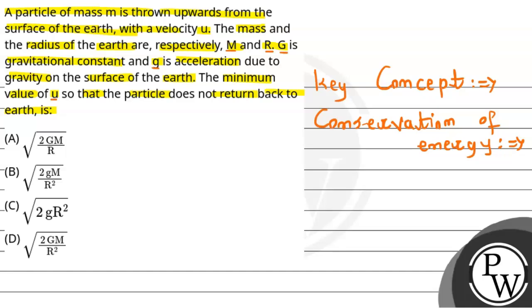And in that case, we can instantly say that the initial energy must be equals to the final energy, which can be stated as initial kinetic energy plus potential energy. This will be equals to the final kinetic energy plus the final potential energy. Now, we will just go through the explanation.